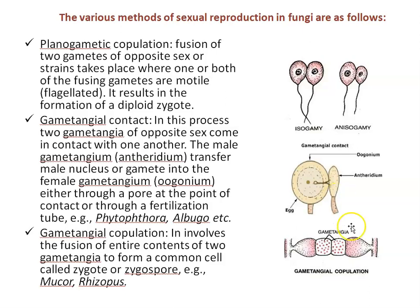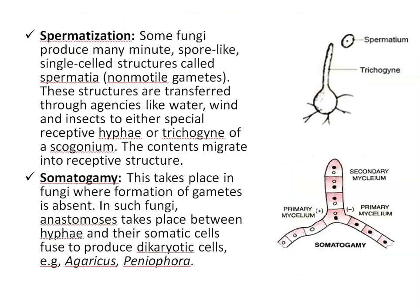The third method is gametangial copulation. It involves the fusion of the entire contents of two gametangia to form a common cell called a zygote or zygospore, and it is commonly found in Mucor and Rhizopus.